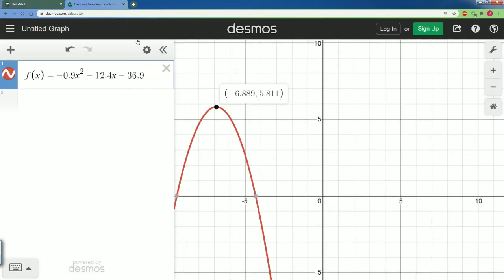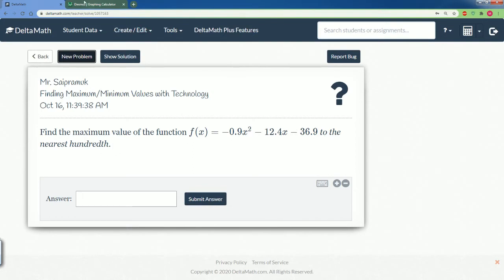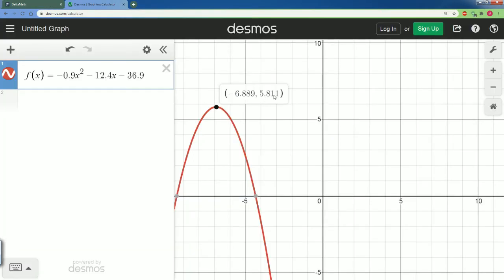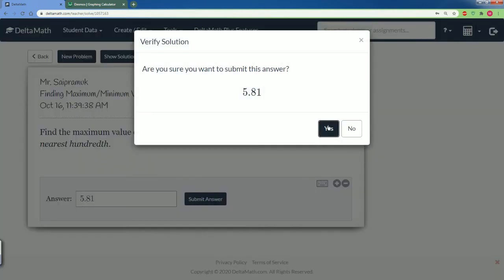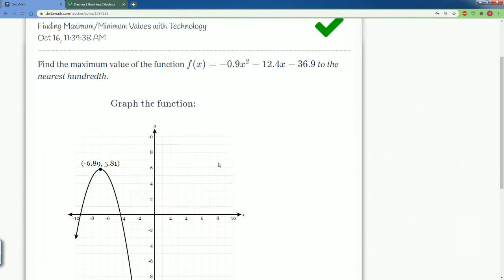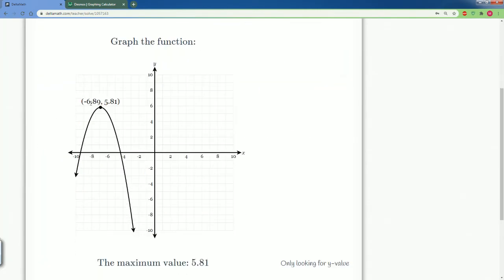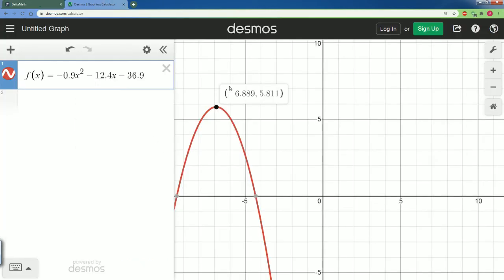So 5.811, so we can round it to the nearest hundredths so it would be 5.81. So 5.81, this is the tenth spot, this is the hundredth spot, so submit. Let's see we get the right answer. Yep, that's correct. So the point here was negative 6.89, but the maximum is 5.81. That's what they mean, 5.81.